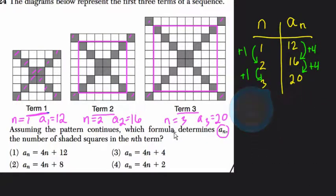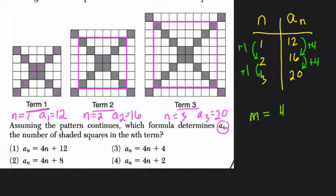...is that m, which is usually the variable we use for slope, is 4 over 1, or just 4. So now things get a little bit interesting, because we know our slope is 4, but we need to write our formula.